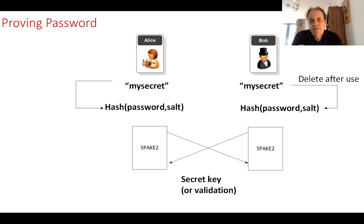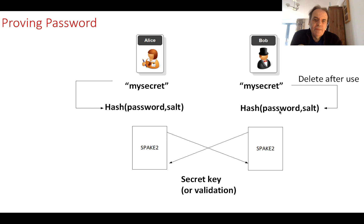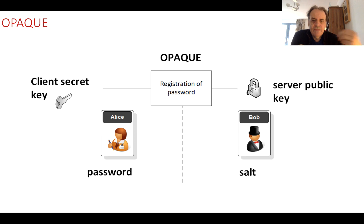If we don't want Bob to actually store the password, what he does is hash the password and the salt, delete the original password, and that is then used to provide the validation. An improved method is OPAQUE, which is a fairly new PAKE method.